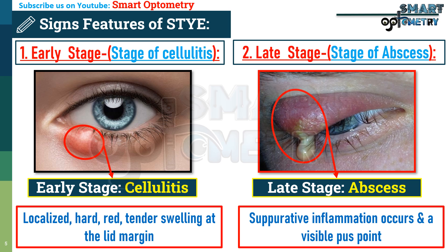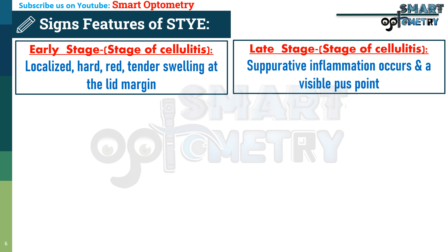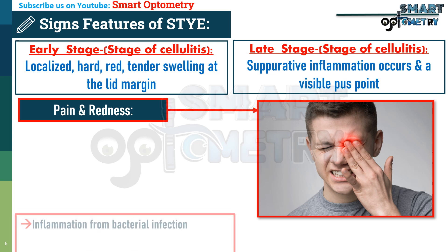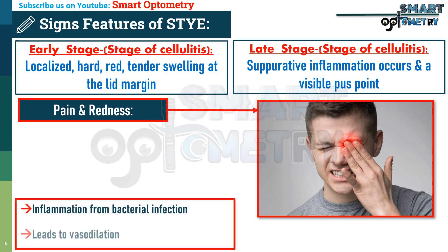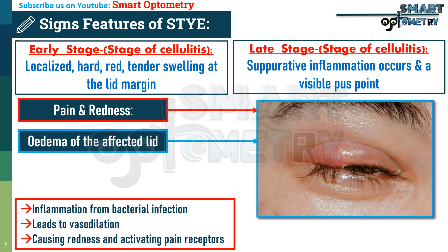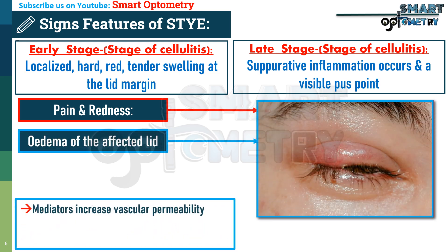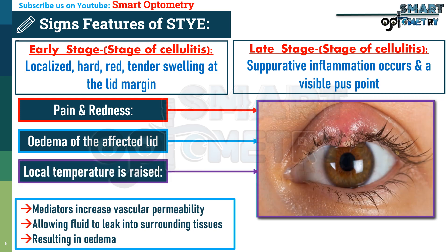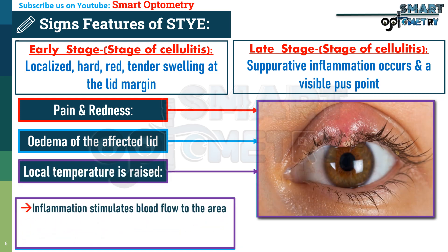Usually there is one stye, but occasionally there may be multiple. The early stage of cellulitis presents with the following signs: pain and redness due to vasodilation from bacterial infection activating pain receptors; edema of the affected lid as inflammatory mediators increase vascular permeability, allowing fluid to leak into surrounding tissues; and raised local temperature as inflammation stimulates blood flow to the area.